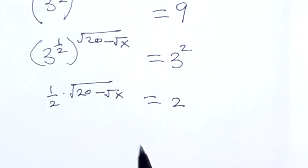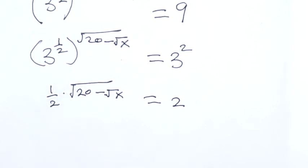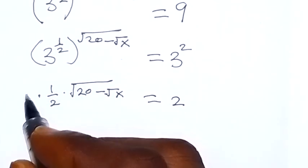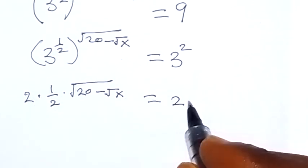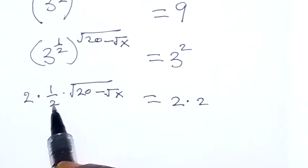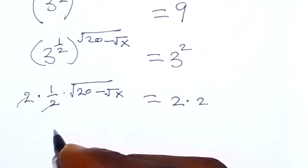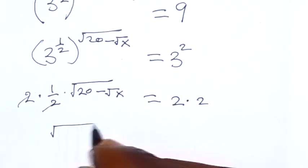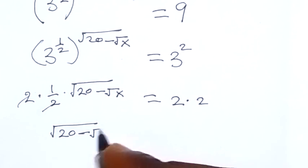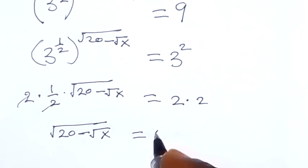From there, let's remove this half by multiplying both sides by 2. These two cancel, and we are left with root 20 minus root x, which will be equals to 4.